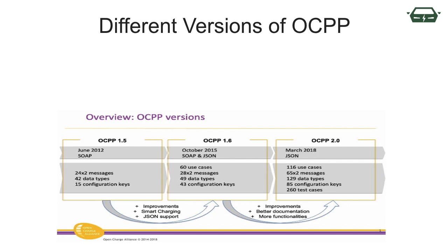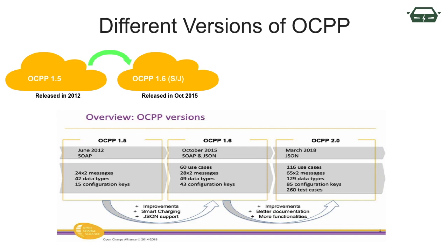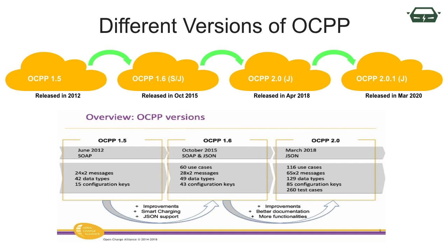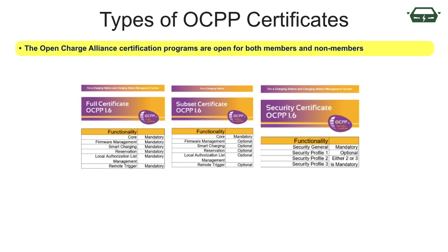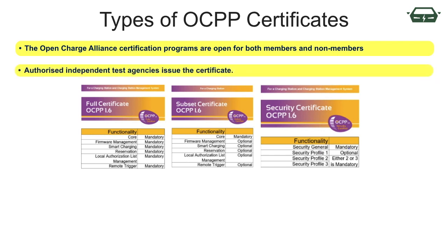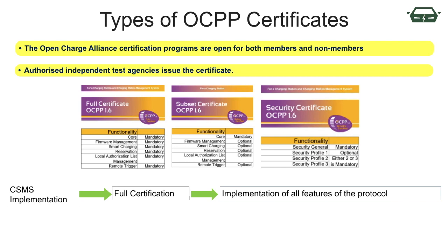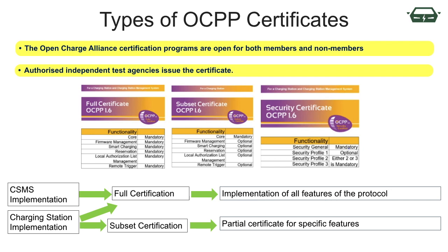There are different released versions of OCPP by Open Charge Alliance. OCPP 1.5 was released in 2012, and the latest version was released in March 2020. The Open Charge Alliance certification programs are open for both members and non-members, though members receive a discount. Conformance to OCPP specifications is validated by authorized independent test agencies who issue the certificate. For a Charging Station Management System implementation, a full certificate is required, meaning the product has implemented all features of the protocol and successfully completed all certification tests. However, for a charging station implementation, one can choose between a full or subset certification — a subset-certified product enables the vendor to indicate which sets of features are implemented, and they can receive a partial certificate for those features.